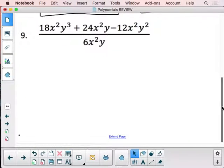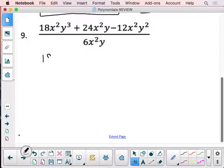The final problem, number 9. I recommend you think of this as three separate problems. You've got the 18x squared y cubed, and that's being divided by 6x squared y.